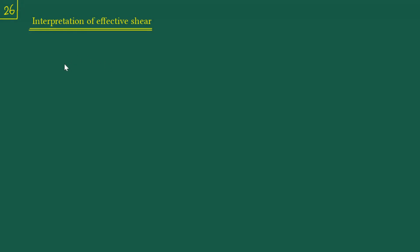In the previous two videos we discussed problems related to the circular plate. In today's video, I want to go back to the general formulation, especially focusing on the boundary condition where we had obtained either-or statements. One of the boundary conditions was expressed such that either qn plus ∂mns/∂s equals zero, or something else. This particular combination qn plus ∂mns/∂s is called the effective shear — this is the q effective.